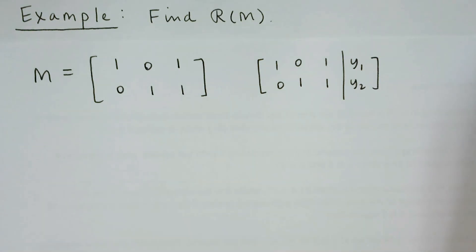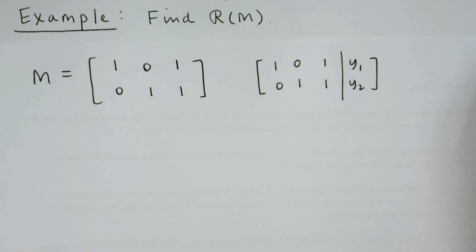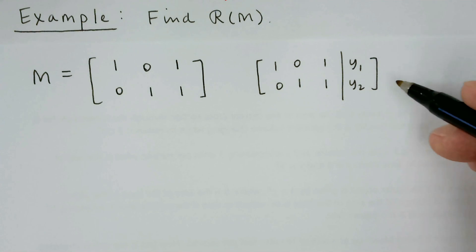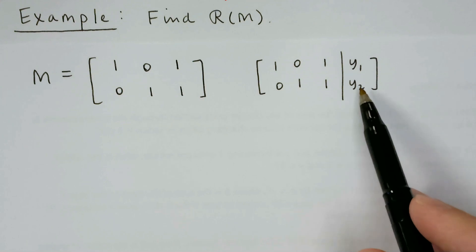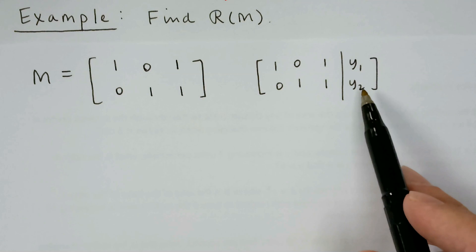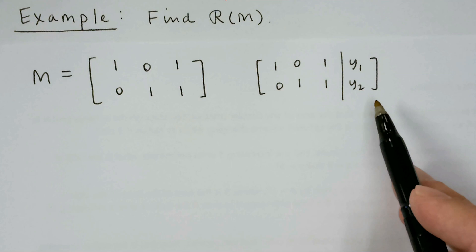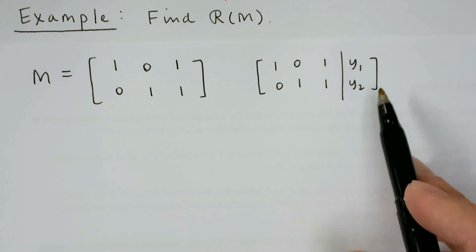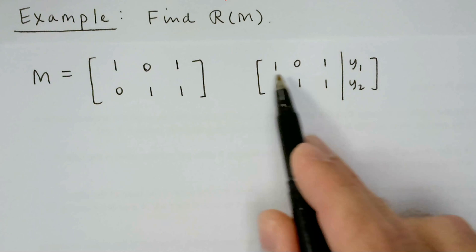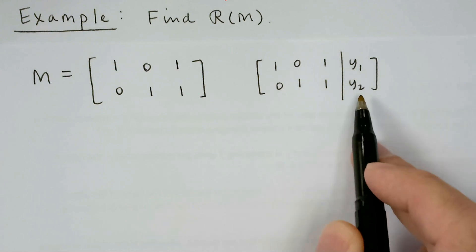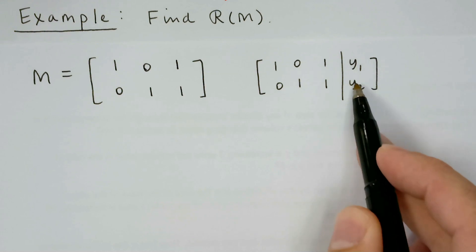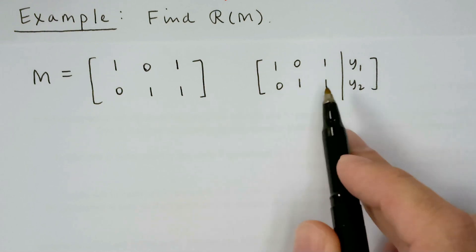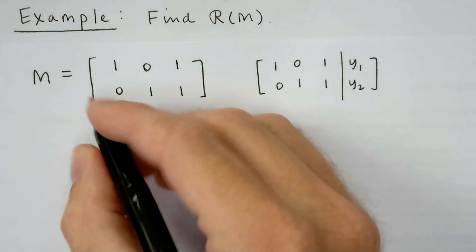This matrix is already in reduced row echelon form. In the last example we set the all-zero row on the right side of the bar to equal zero because we wanted to make sure we didn't have an inconsistent system. But this augmented matrix is always going to be consistent — in fact, there's always going to be infinitely many solutions. So for any y₁ and y₂, I can find an x where Mx equals that vector. The range of M is all of R².